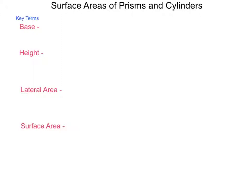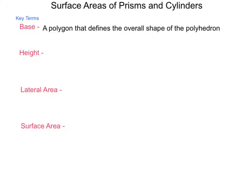Let's take a look at a few definitions. A base is a polygon that defines the overall shape of a polyhedron. Along with the bases, there are lateral surfaces. These make up the walls, and the lateral surfaces are always going to be parallelograms. If they're rectangles, they will create a right prism. If they are more general parallelograms, they will create oblique prisms.